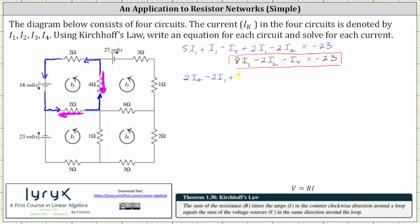Continuing circuit two: plus four times I sub two, but I sub three is flowing in the opposite direction, so we have minus four times I sub three, plus two times I sub two. Because the current is flowing in the same direction as the volts, this equals positive 18. Combining like terms: negative two I sub one, plus eight I sub two, minus four I sub three equals 18. That's the simplified equation for circuit two.